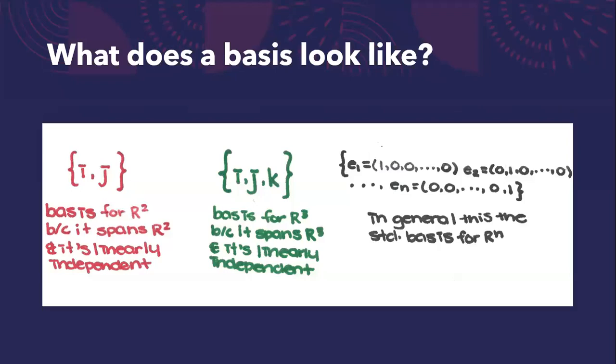What does a basis look like? In this example, the collection {i, j} is a basis for R². It spans R² and the vectors i and j are linearly independent because neither is a multiple of the other. This is called the standard basis for R².